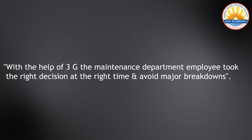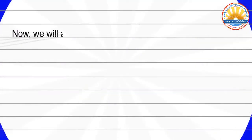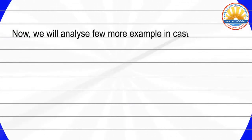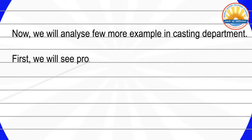With the help of 3G, the maintenance department employee took the right decision at the right time and avoided a major breakdown. Now we will analyze a few more examples in the casting department. First, we will see the problem without 3G.